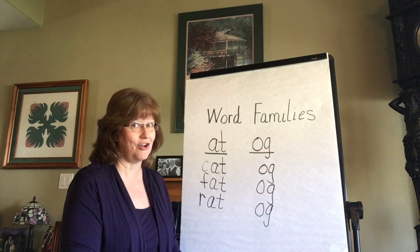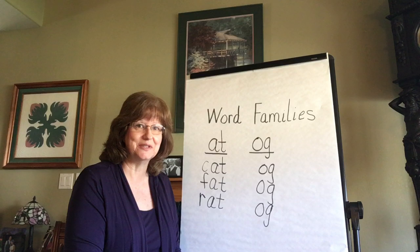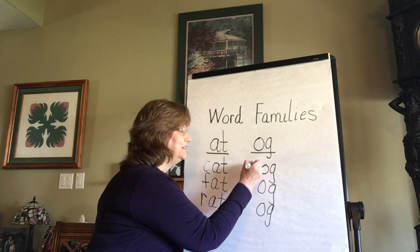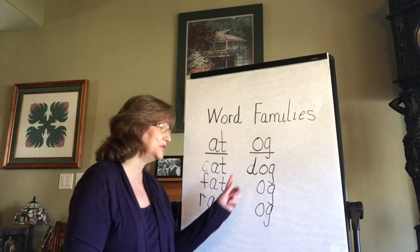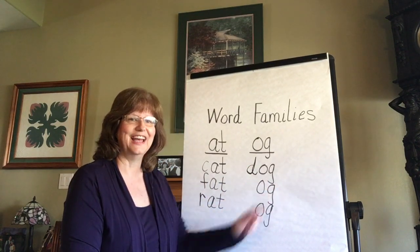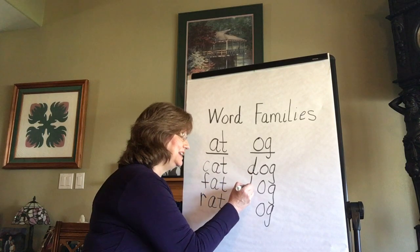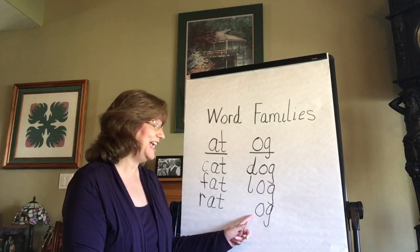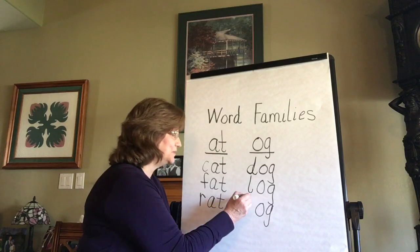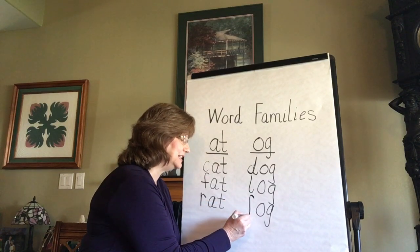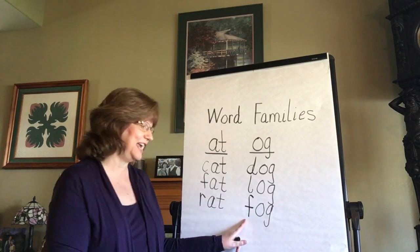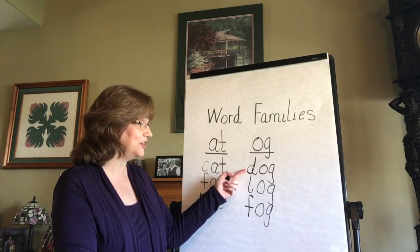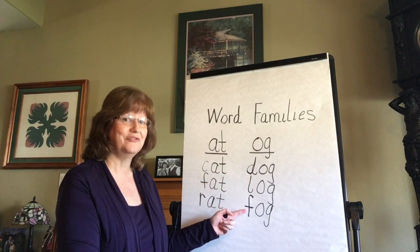If we had 'og,' we could turn those into three words that belong to the 'og' word family. If I put a D right here, we've just written the word 'dog.' If I put an L right here, we've written the word 'log.' And if I put an F under the last one — where it reminds me of kind of a chilly day — it would say 'fog.' So all of these words belong to the 'og' family: dog, log, fog.